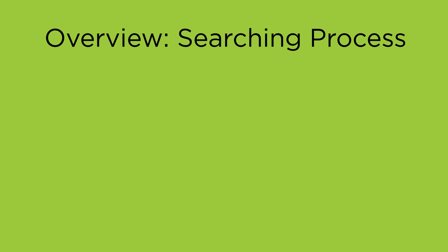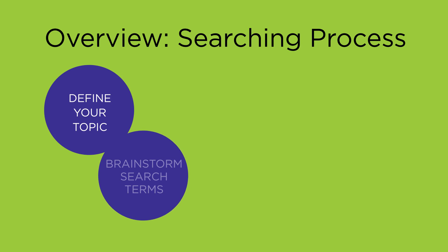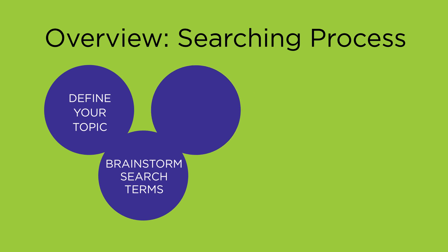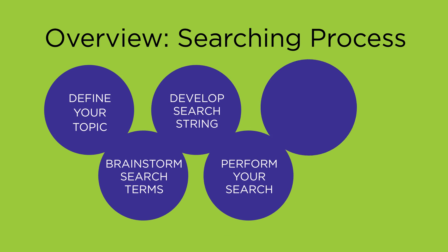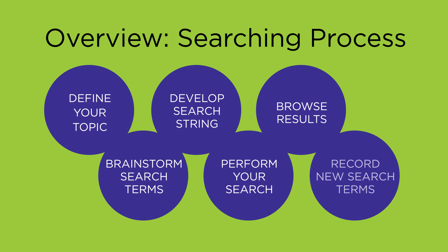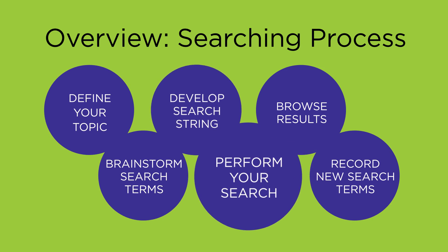Before we get to specifics, let's look at a very brief overview of the searching process. First, you define your topic. Next, you brainstorm search terms. Combine these search terms to develop a search string. Then you perform your search. Next, you can browse results and record new search terms. These new search terms may help you further define your topic. Notice that it's a process which continually evolves.